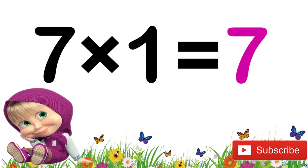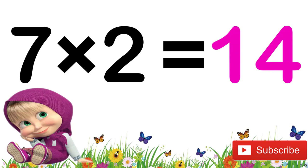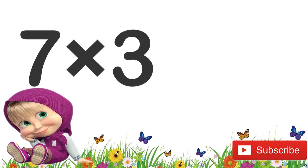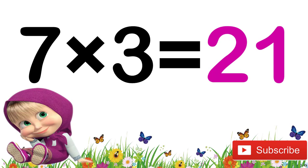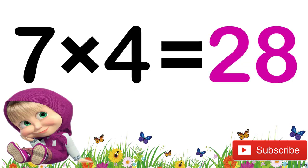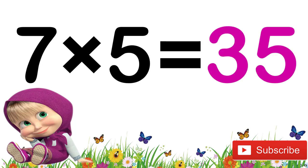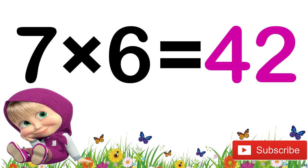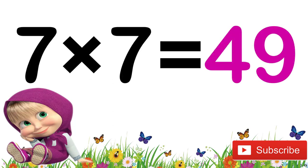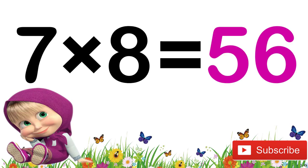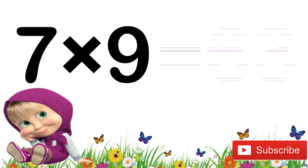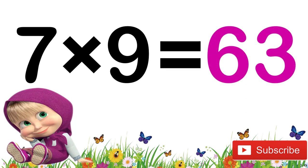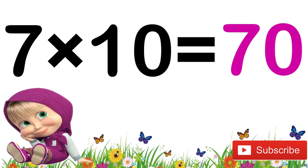Now let's revise again children. 7 ones are 7. 7 twos are 14. 7 threes are 21. 7 fours are 28. 7 fives are 35. 7 sixes are 42. 7 sevens are 49. 7 eights are 56. 7 nines are 63. 7 tens are 70.